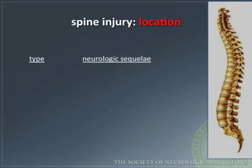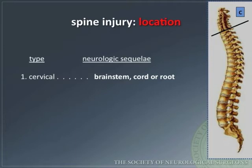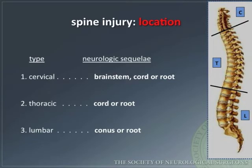Spine injuries may occur at different locations, and each type has a particular neurological sequelae. Cervical injuries may involve the brainstem, cord, or root. Thoracic injuries involve the cord or root. Lumbar injuries involve the conus or root.